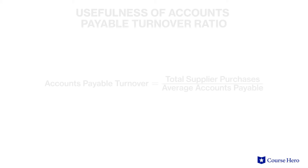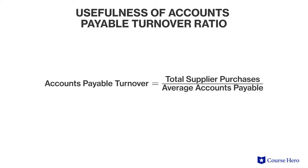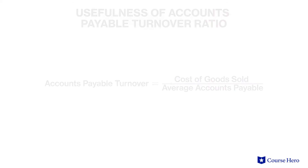If the amount of total supplier purchases on credit is not available, cost of goods sold could become the numerator. Keep in mind, however, that the accounts payable turnover ratio is useful only insofar as it measures the quantity of total purchases from suppliers on credit as measured against accounts payable.